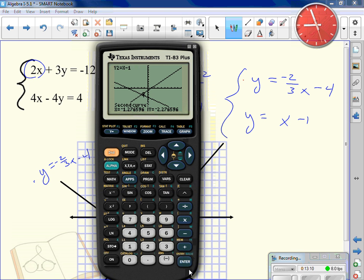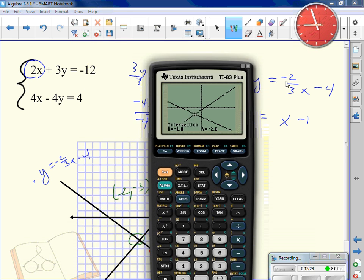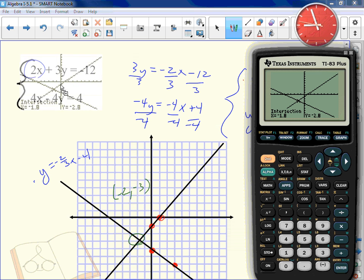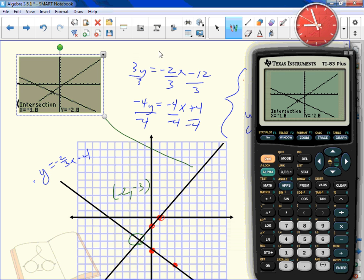The calculator now says first curve. Press enter. It's saying second curve. That's the second one I graphed. It also tells you the equation up here. Press enter. It's saying guess. I really don't care what the guess is at. I press enter again. And the calculator actually spits out the correct answer.